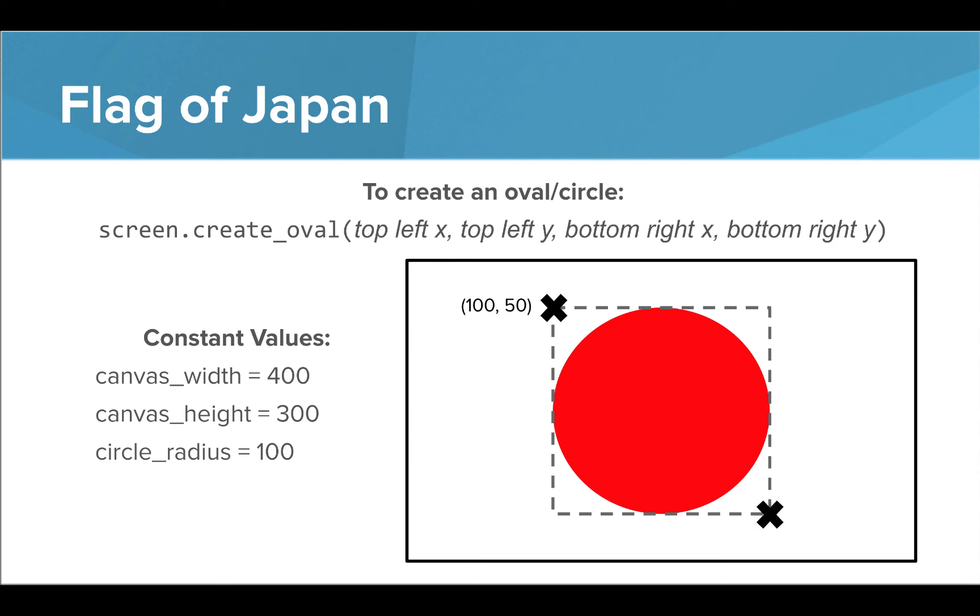To get the coordinates of the second point, we would follow a similar process. We would add the 200 pixels to get to the center of the canvas to 100 pixels, which is the radius of the circle, to get an x coordinate of 300. And for the y value, we could add the 150 pixels from the top of the canvas to the center of the circle to the 100 pixels from the circle's radius and get a y coordinate of 250. Now that we have all the info we need, let's go write this in the editor.